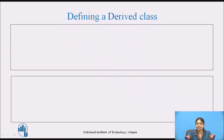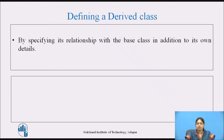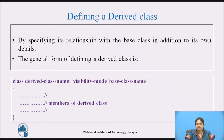Let us see how to define a derived class. We can define a derived class by specifying its relationship with the base class in addition to its own details. This can be explained using this syntax: class, followed by the derived class name, then a colon, then the visibility mode (which tells the mode of derivation), followed by the base class name.